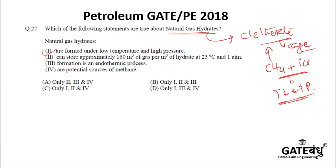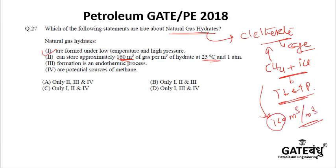Gas hydrates can store approximately 160 cubic meters of gas per cubic meter of clathrate. For methane, 1 cubic meter of ice clathrate structure releases approximately 160 cubic meters of methane. So a large volume of methane is released when producing gas from 1 cubic meter of clathrate. For CO₂ stabilization, temperature has to be less than 10°C, while for methane the reference condition is 25°C.